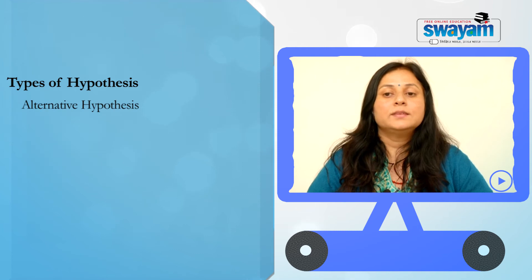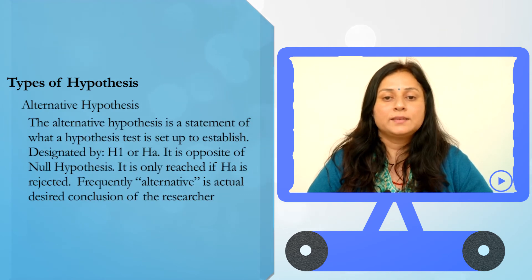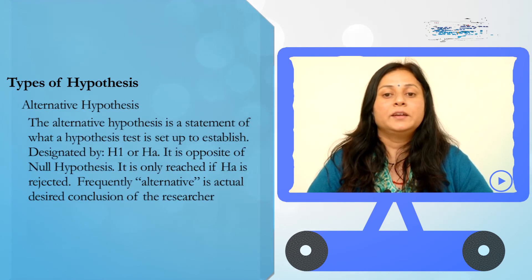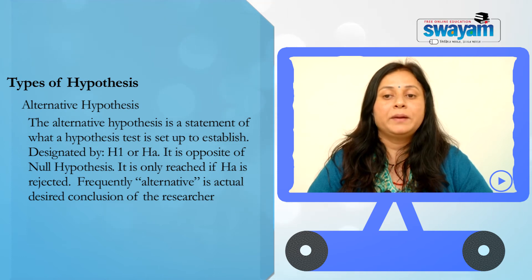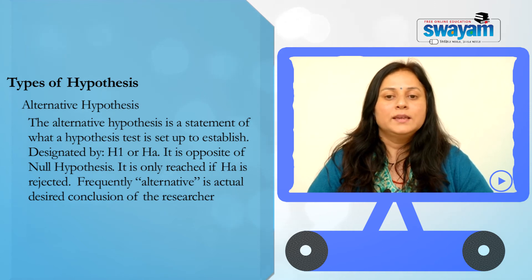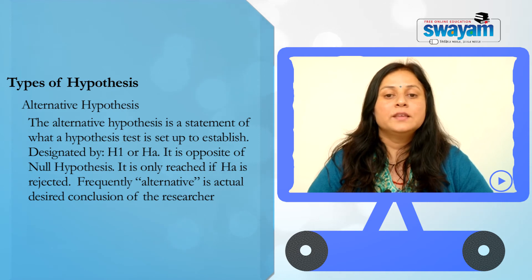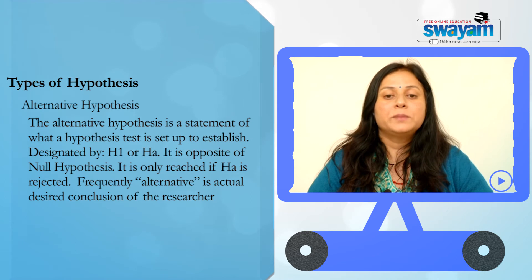The alternative hypothesis is the statement of what a hypothesis test is set up to establish. It is designated by H1 or HA. It is the opposite of the null hypothesis and is only reached if H0 is rejected. Frequently, the alternative is the actual desired conclusion of the researcher.